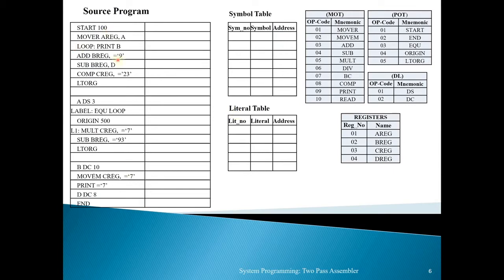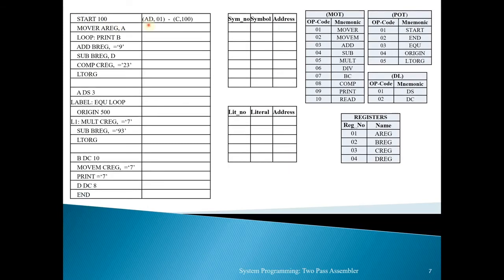We will scan the source program line by line and generate intermediate code. The first statement is 'START 100' — we set LC equal to 100. Since START is an assembly directive at position 01 in the POT, the intermediate code is: (AD, 01) (C, 100), where the first operand is absent (dash) and the second operand is the location counter value 100.